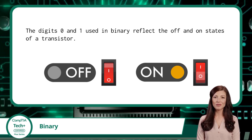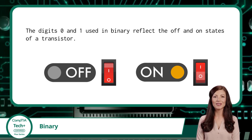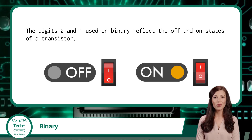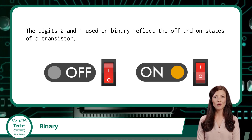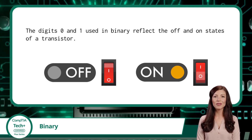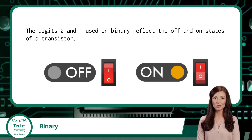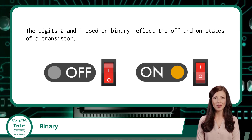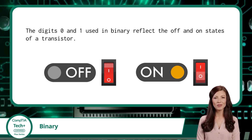0 represents off, and 1 represents on. That's why binary is the computer's native language — it's a direct match to how the machine works physically. But binary isn't just useful for powering hardware. It's also a great way to represent two-state ideas in software. Things like true or false, yes or no, or whether something is enabled or disabled, can all be stored and processed using binary logic.